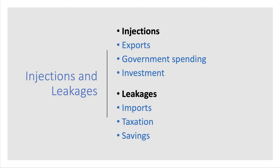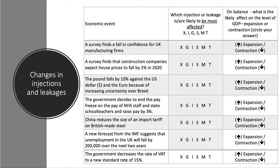There are three ways other than consumer spending where we can add to the demand for goods and services. Those injections are exports, government spending, and investment. In the model there are three ways that money can leak or withdraw from the circular flow: imported goods and services, taxation, and savings — people's disposable income that is not spent. In this exercise I'll give you some economic events and you choose which injection or leakage is most likely affected, and on balance what's the likely impact on GDP — either an expansion or contraction.